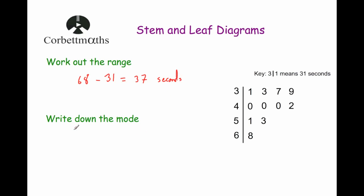The next question says: write down the mode. The mode is the most common number. So here we've got 31, 33, 37, 39, 40, 40, 40, 42, 51, 53 and 68. Because we've got these three zeros all next to each other in the 40s row, that means that 40 happens three times. So 40 is the most common number and the mode is 40 seconds.